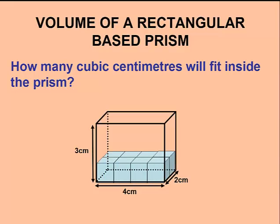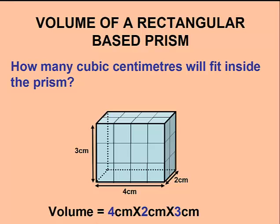For our rectangular base prism, we would have 8 cubic centimeters that would fit in the bottom layer. Another 8 cubic centimeters would fit in the middle layer, and a third 8 cubic centimeters would fit on the top layer, thus giving us 24 cubic centimeters that would fit inside.